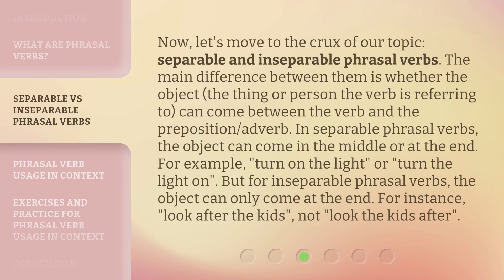Now let's move to the crux of our topic: separable and inseparable phrasal verbs. The main difference between them is whether the object — the thing or person the verb is referring to — can come between the verb and the preposition or adverb. For separable phrasal verbs, the object can come in the middle or at the end. For example: 'turn on the light' or 'turn the light on.' But for inseparable phrasal verbs, the object can only come at the end — for instance, 'look after the kids,' not 'look the kids after.'